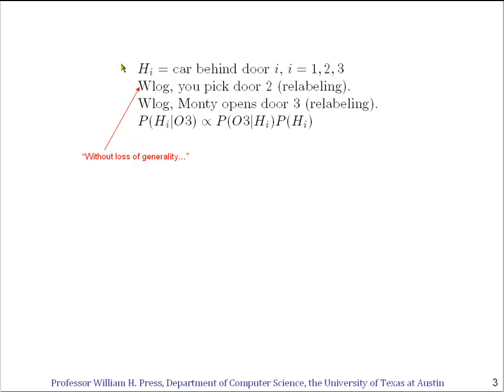Just to avoid doing all the permutations of every possible 1, 2, and 3, we can note that without loss of generality — I'll write that as WLOG — we might as well say that you pick door 2.